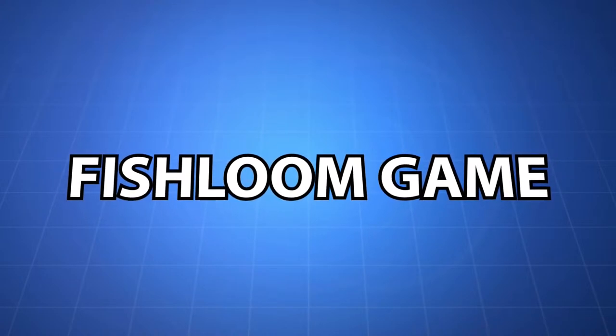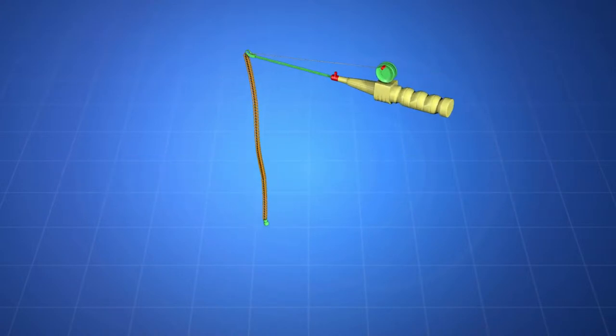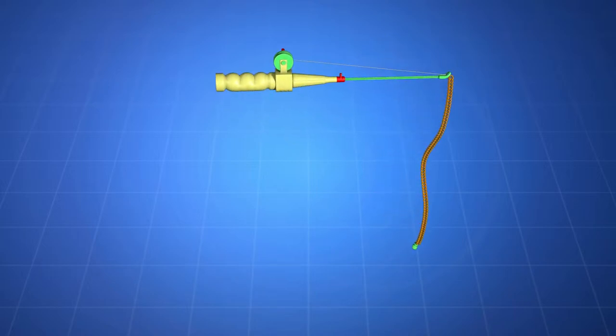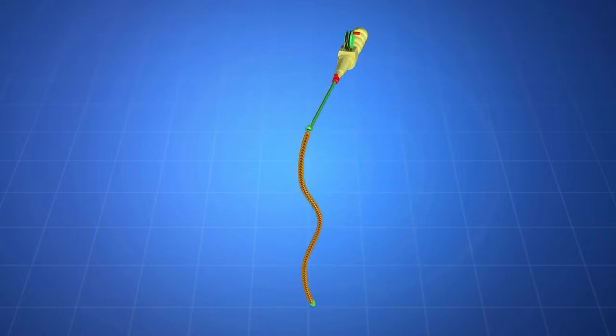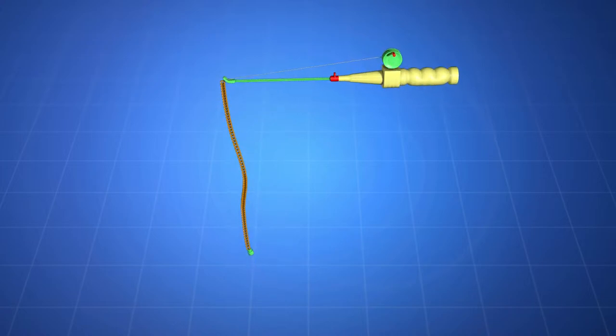Introducing the Fish Loom Game. Create your own loom pole by looming your favorite colored bands and attaching a magnet to the end. Attach your completed loom to the fishing pole, creating your loom pole.